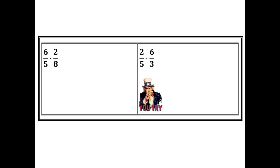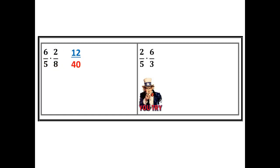Let's try one together. I'm going to multiply my numerators together — six times two gives me 12. I'm going to multiply my denominators — five times eight gives me 40. Now I need to simplify.